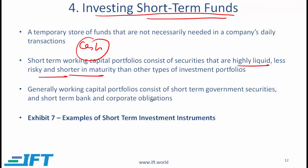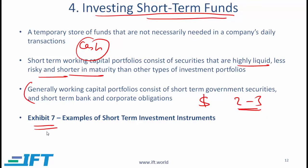Generally, working capital portfolios consist of short-term government securities and short-term bank and corporate obligations. You can think of these securities as securities that can be converted into cash within two or three days. Examples of short-term securities or short-term investments are given in example 7, but in most countries, the popular short-term investment would be government T-bills.